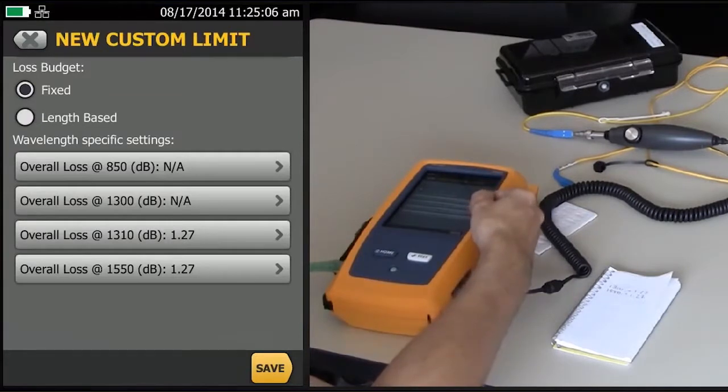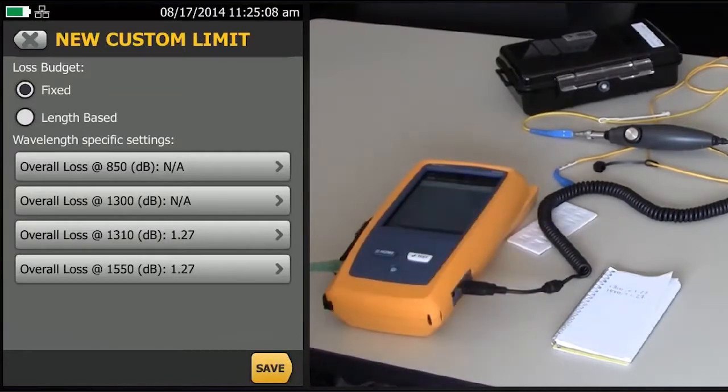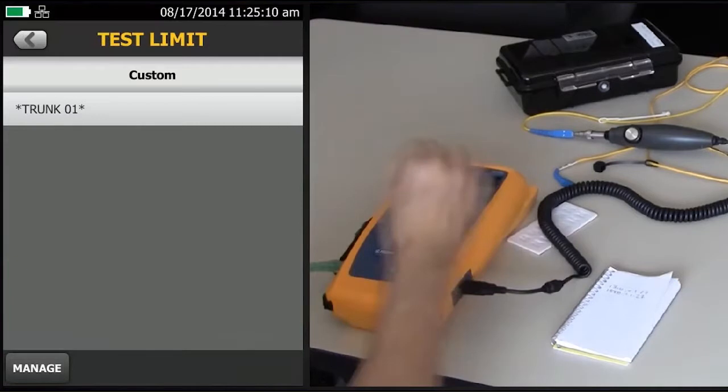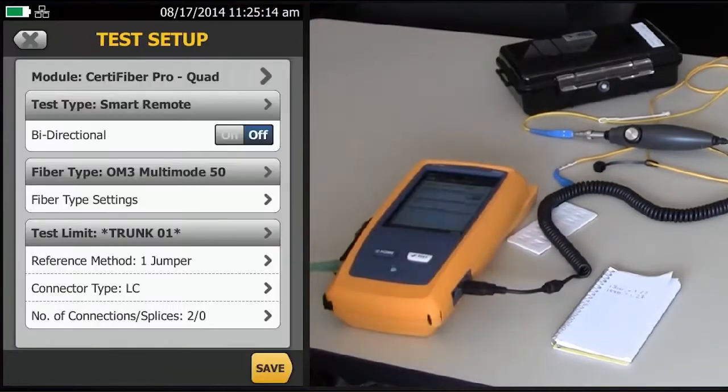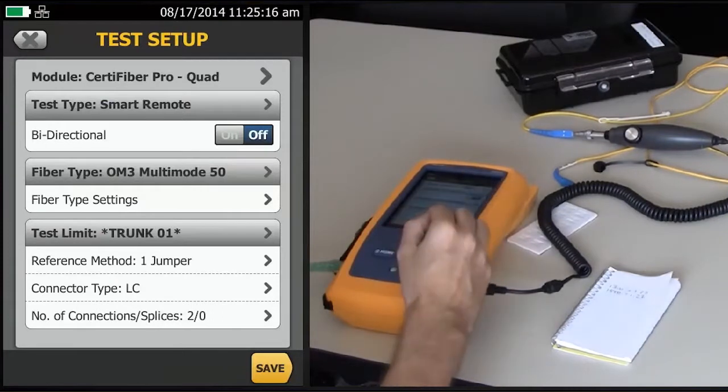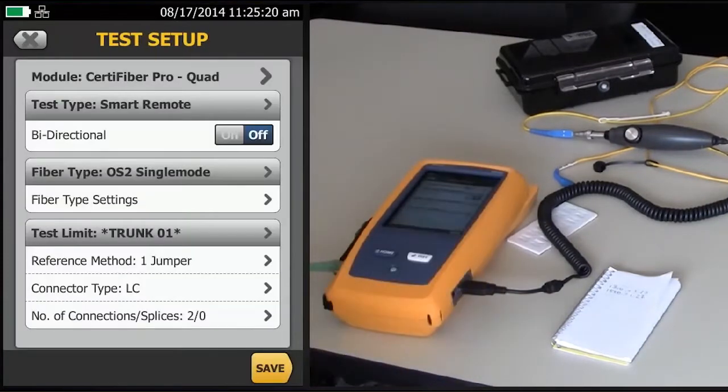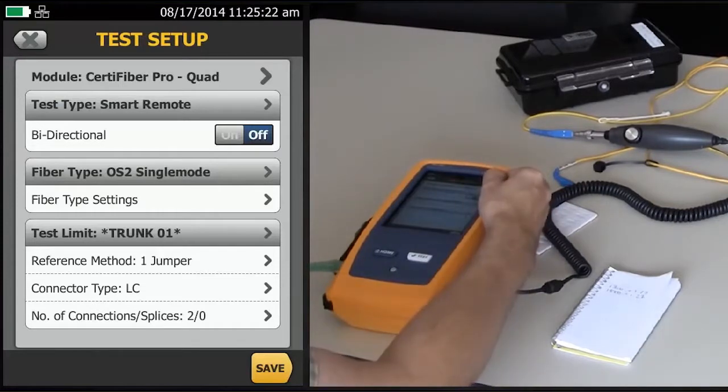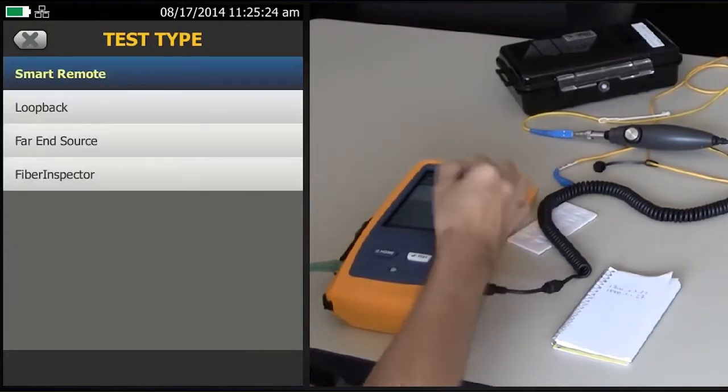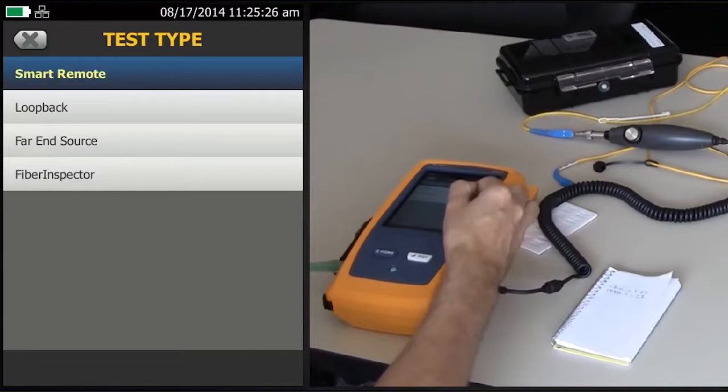That's my two wavelengths selected there. I'll tap Save. Here is my custom limit. Important to actually select it now. And since this is single mode, let's change the fiber type to single mode. So I'm in Smart Remote mode. I could change that to Fiber Source mode if I was testing a single fiber. I'll leave it in Smart Remote.